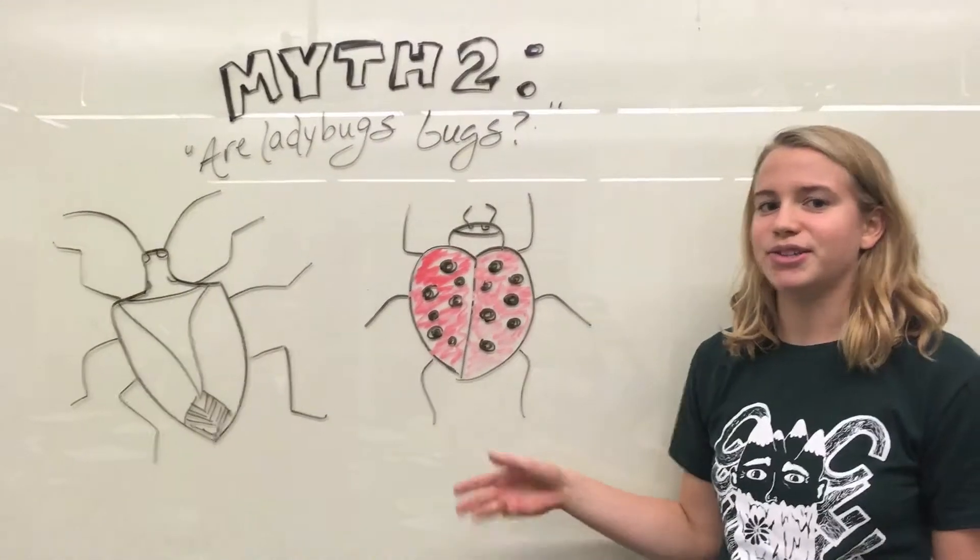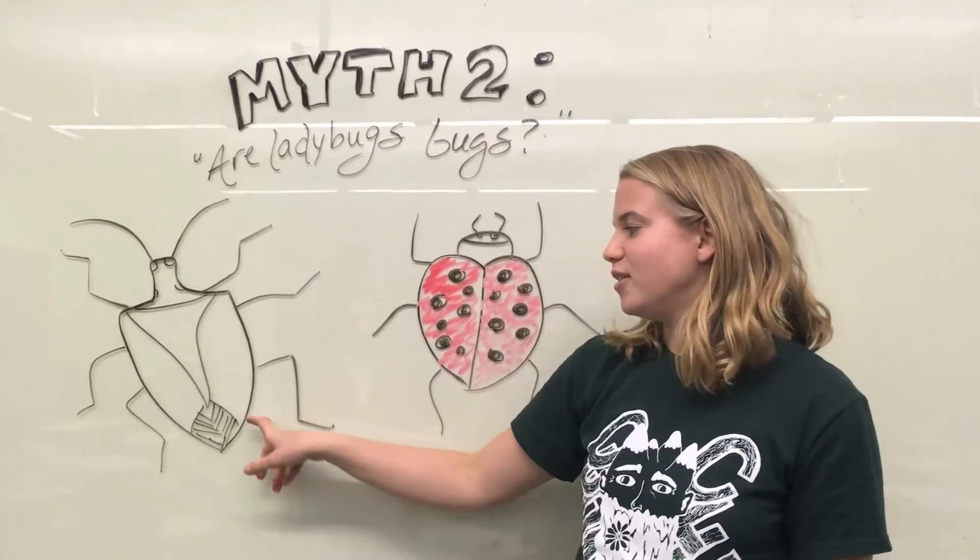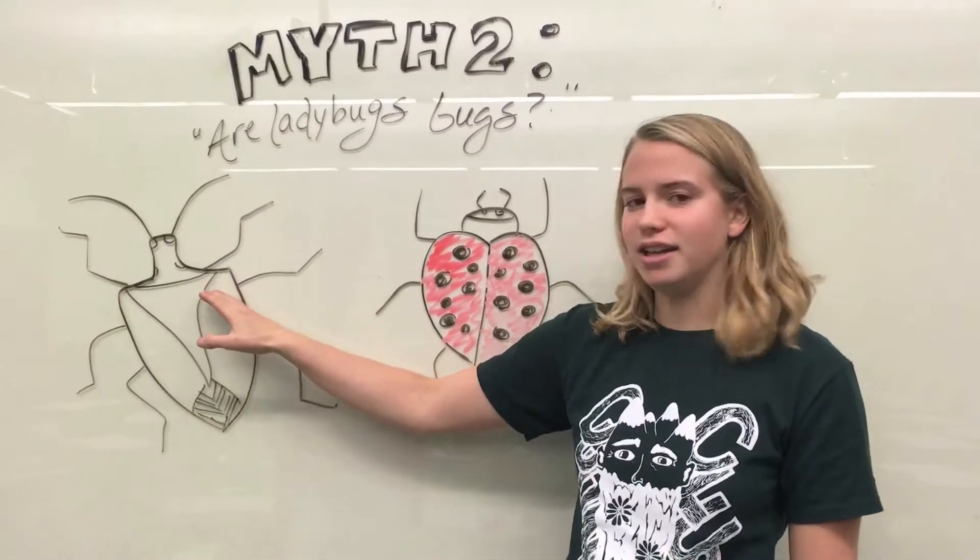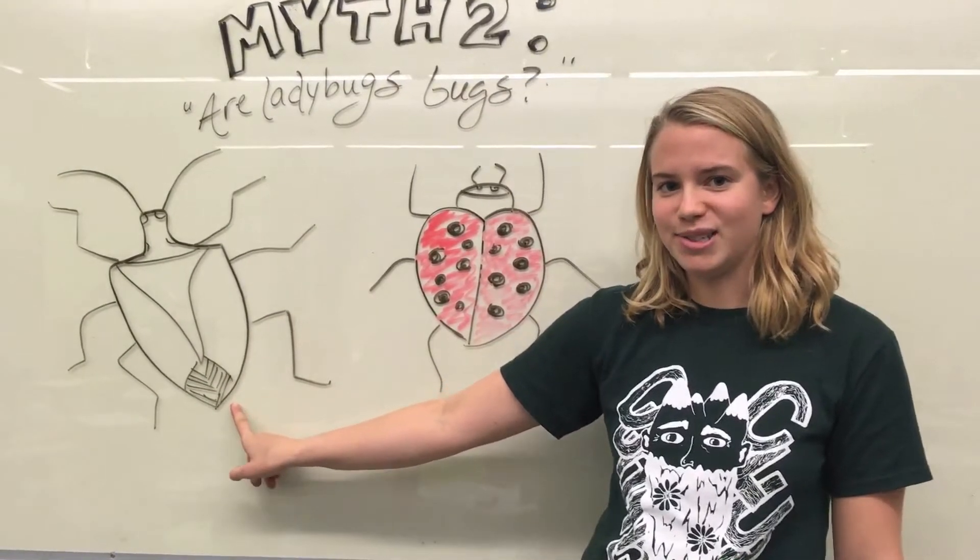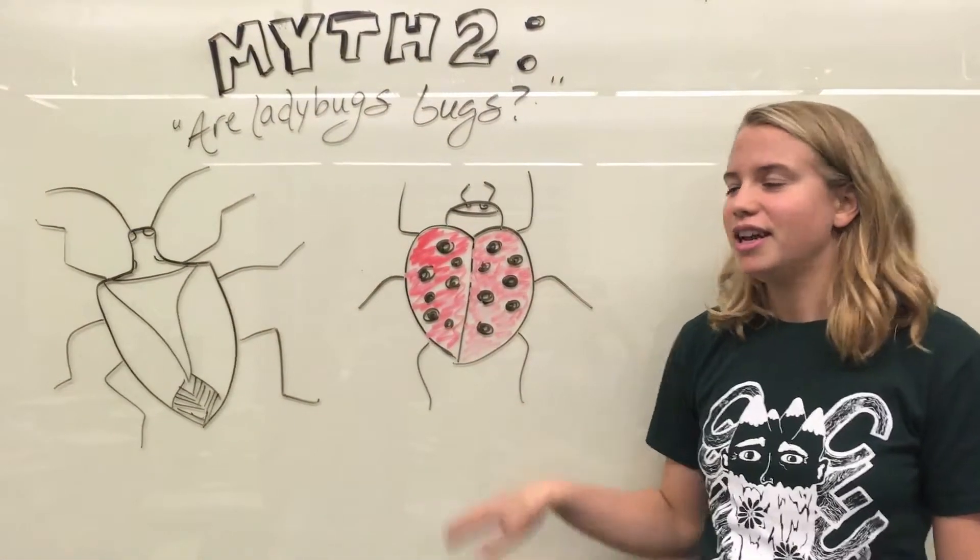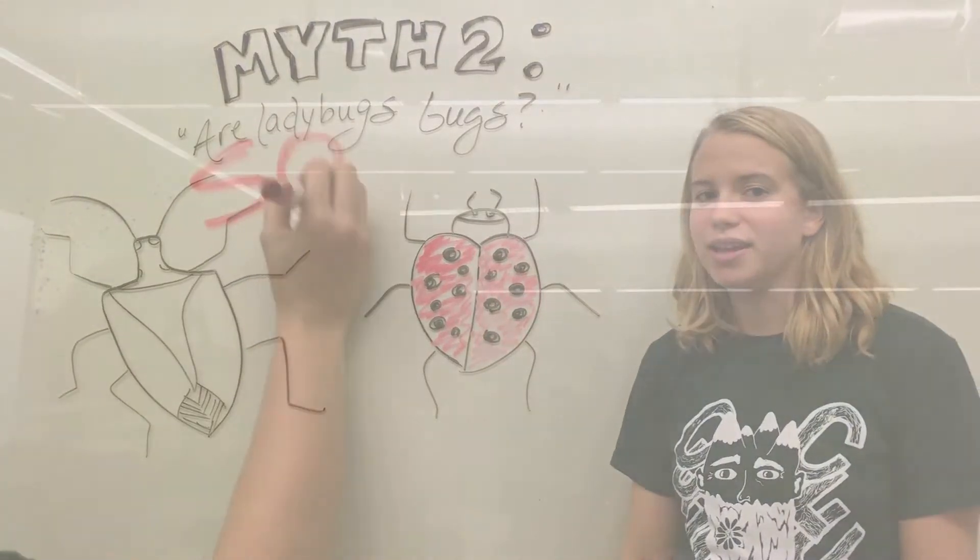So, to figure out if ladybugs are actually bugs, first we have to look at a true bug. So, right here, you can see that this true bug here has a hemelytra. So, the elytra only covers half of its body, and under here are those membranous wings. On the other hand, a ladybug does not have a hemelytra. It has a full elytra, and therefore, ladybugs can't actually be bugs, and they're really insects.